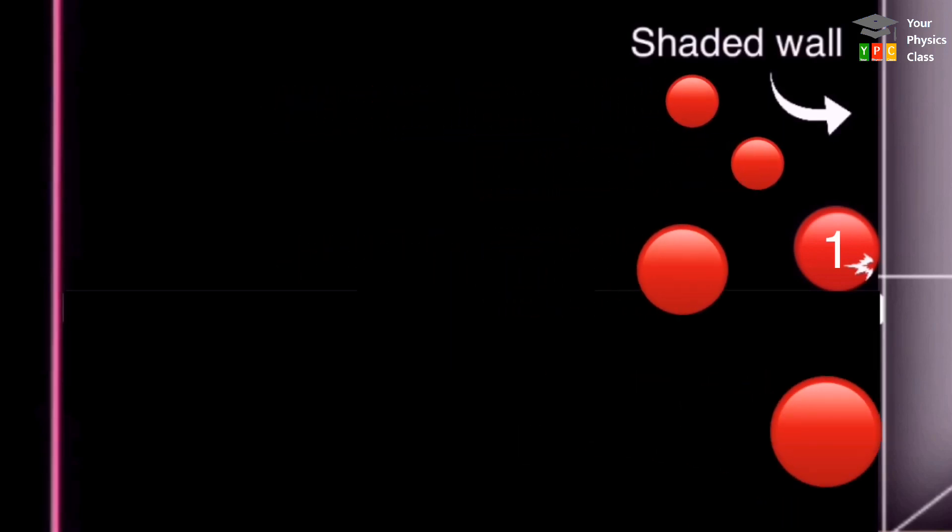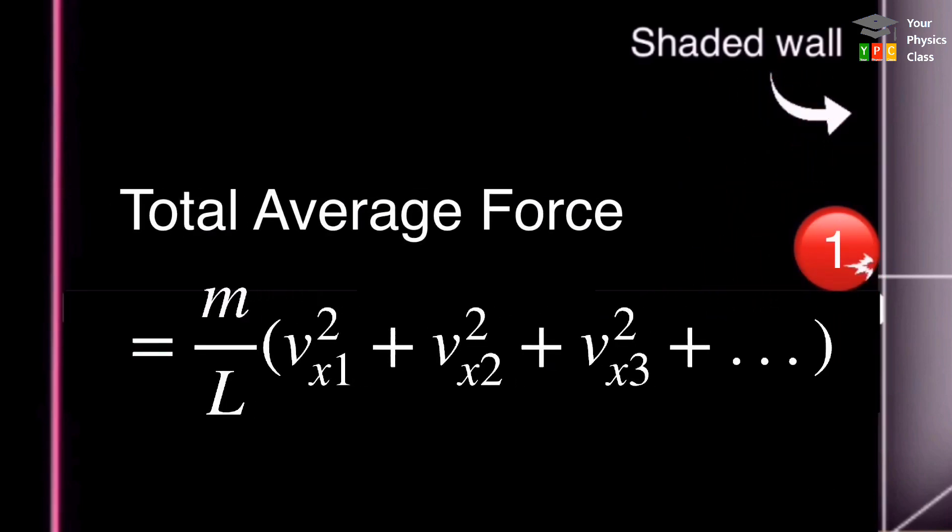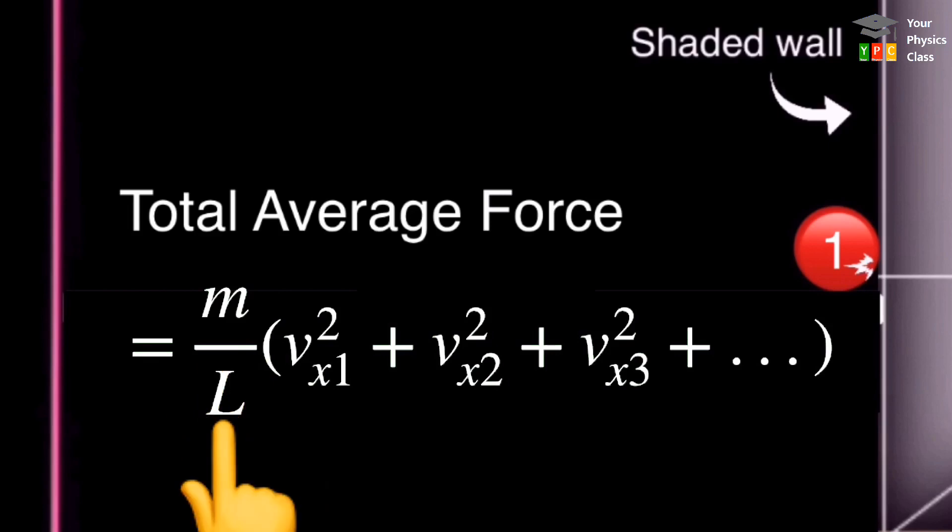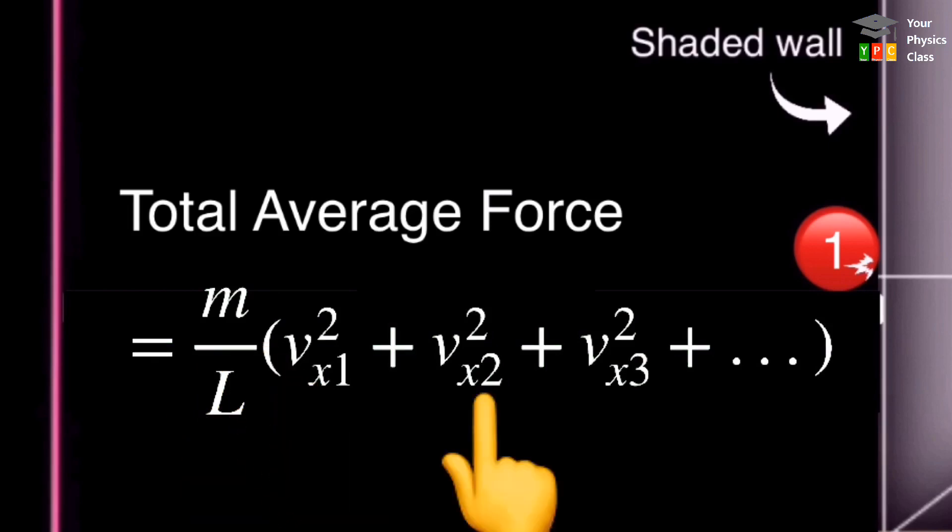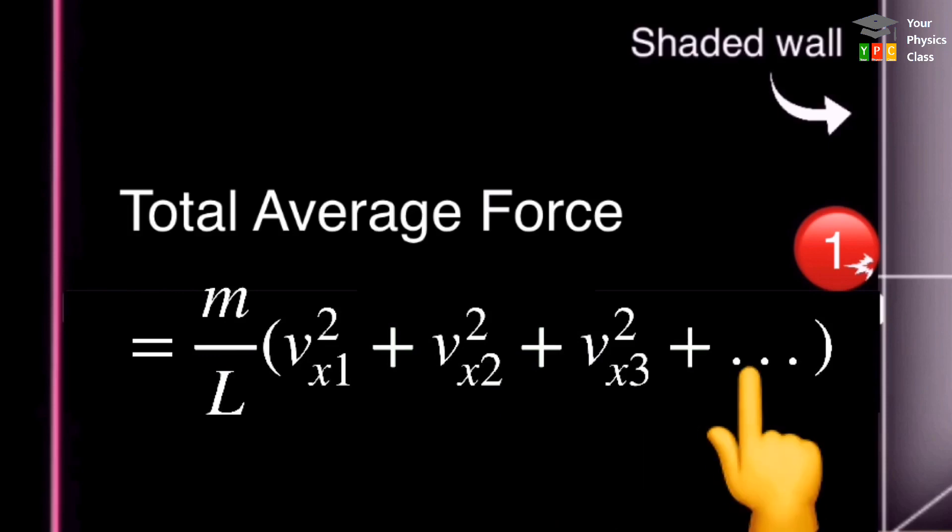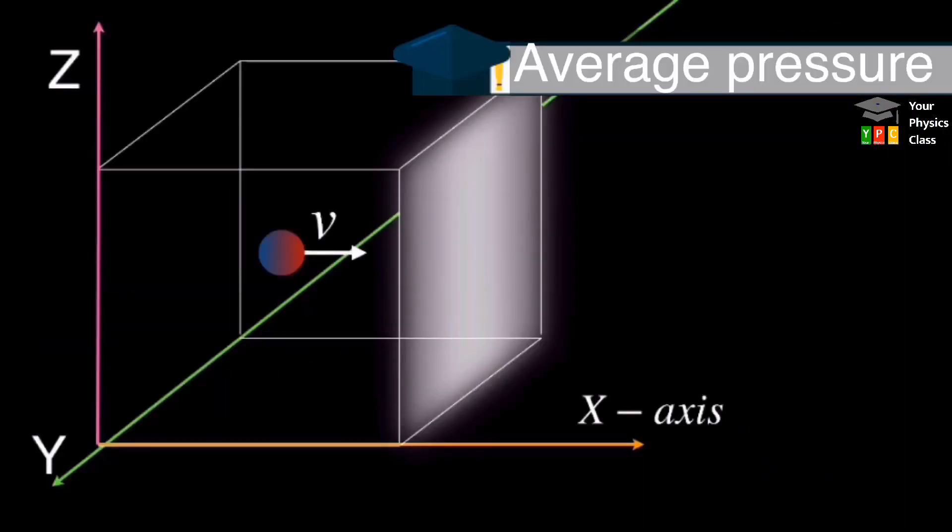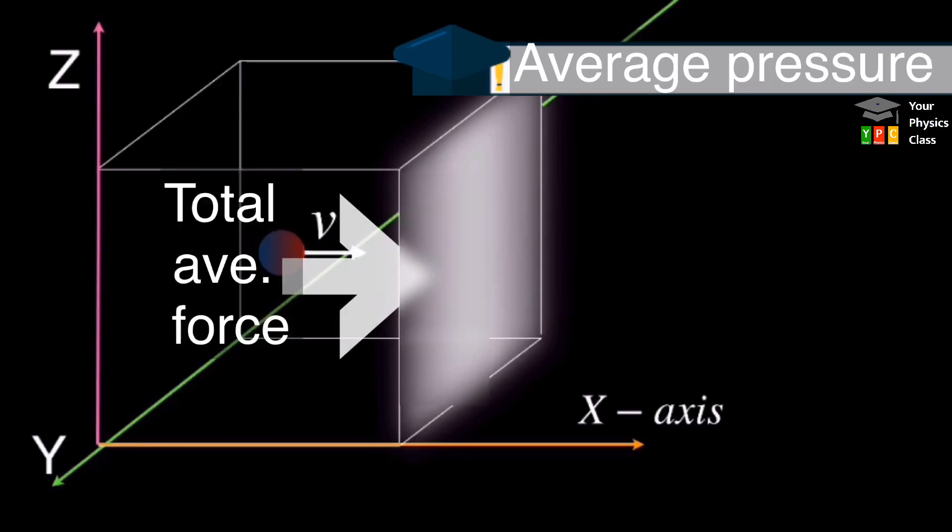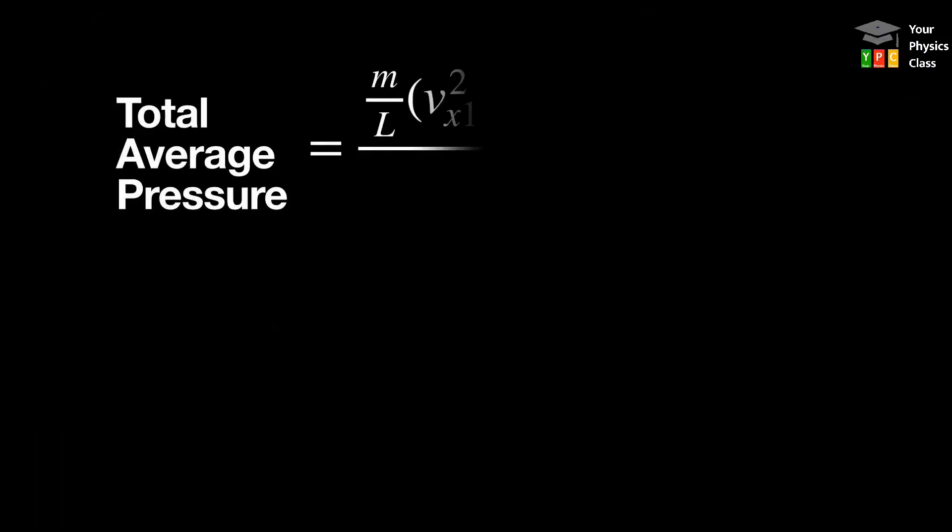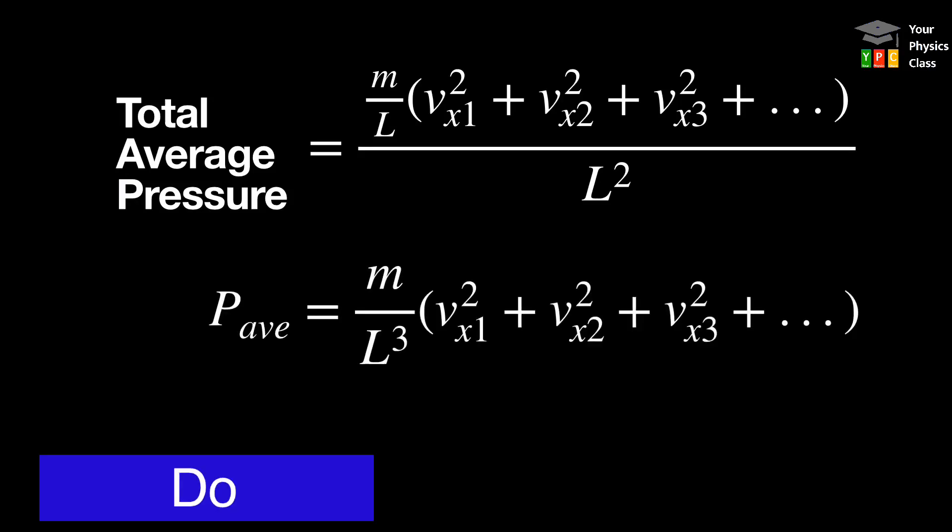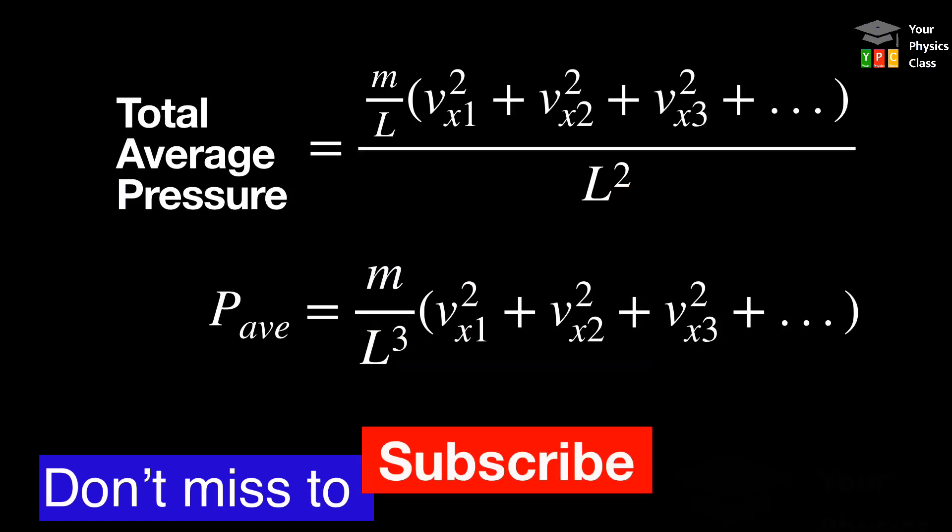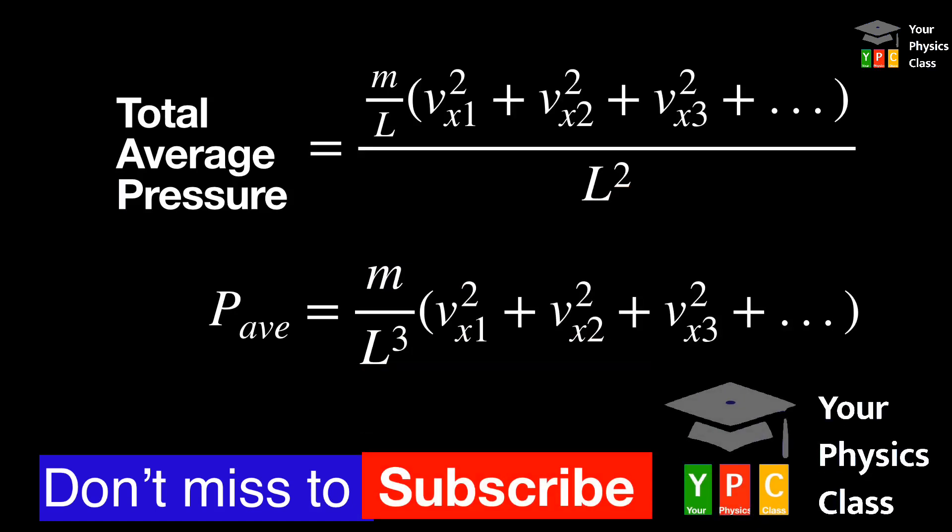Now, considering all molecules. So, total average force on wall is M by L times VX1 square plus VX2 square plus VX3 square plus dot dot. Total average force acting on area of shaded wall. So, it becomes M by L times VX1 square plus VX2 square plus VX3 square plus dot dot so on divided by L square. So now the average pressure becomes M by L cube into VX1 square plus VX2 square plus so on.